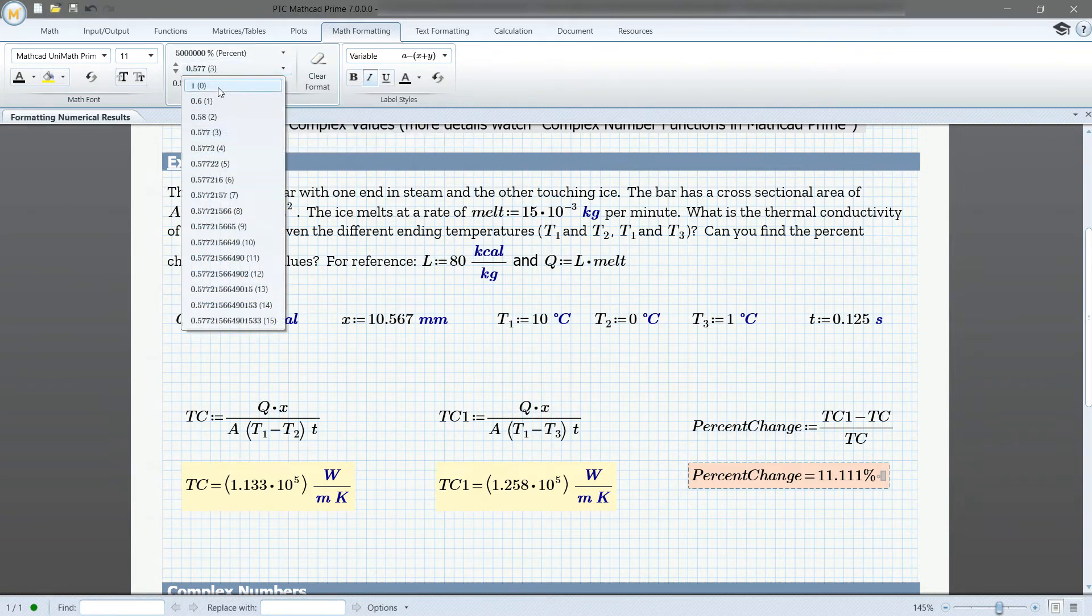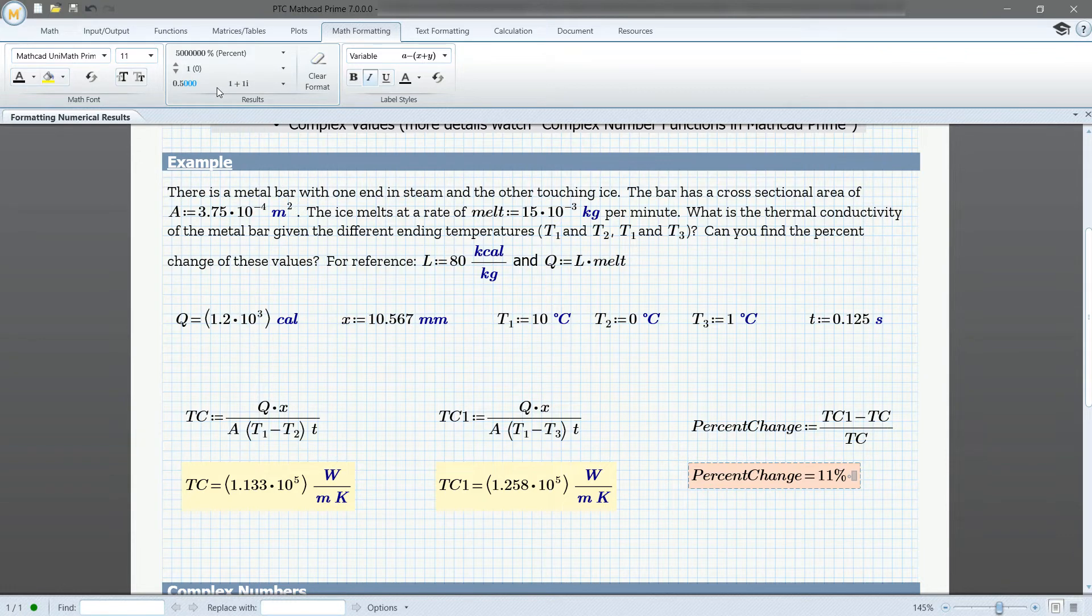The decimal precision can be set from a range of values from 0 to 15, and you can also choose to display the trailing zeros by clicking this button.